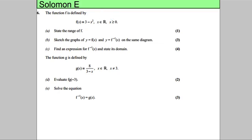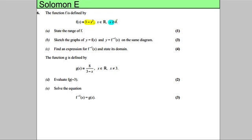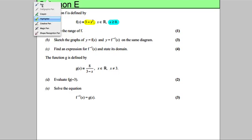In this question we've got a function f, and the function is a quadratic. The domain is x has to be bigger than or equal to 0. It says state the range of f. So what does f look like? Let's just draw this graph.